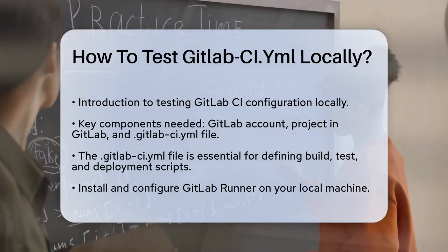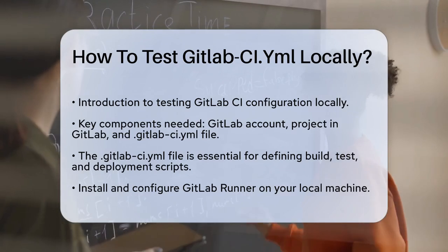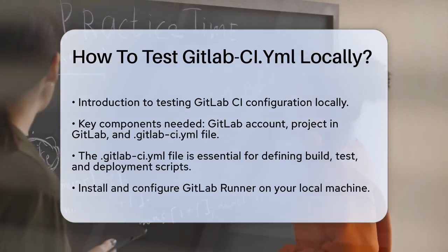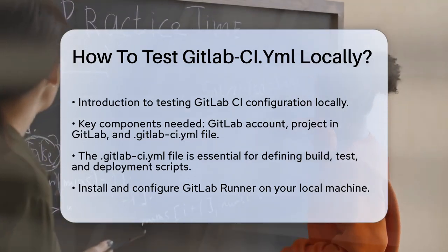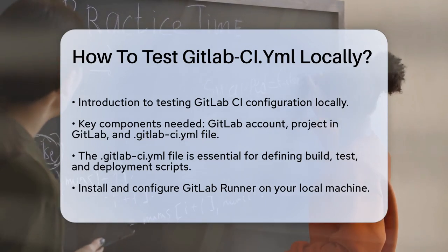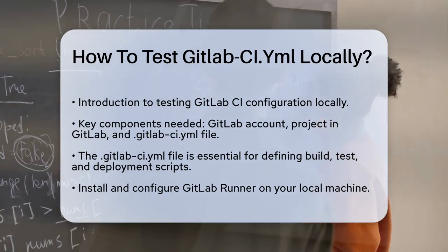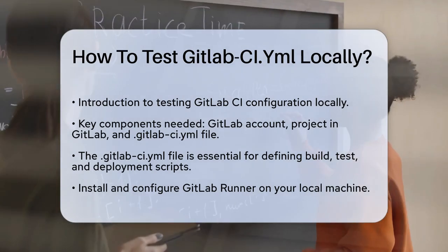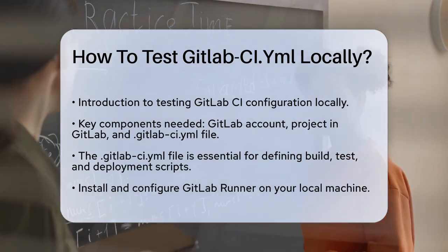First, you need to ensure you have a few key components set up. You'll need a GitLab account, a project hosted in a GitLab repository, and a file named .gitlab-ci.yml in the root directory of your project. This file is where you define your build, test, and deployment scripts.